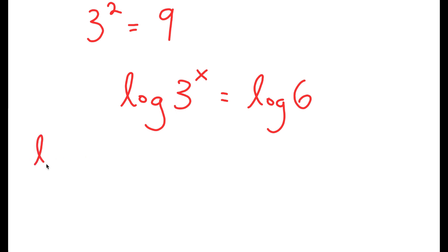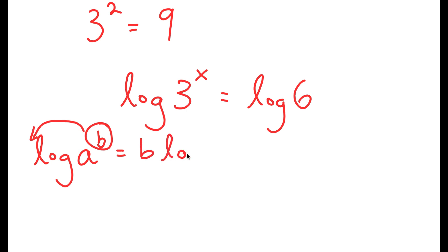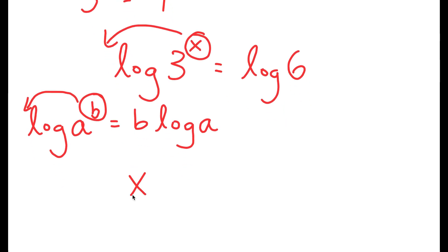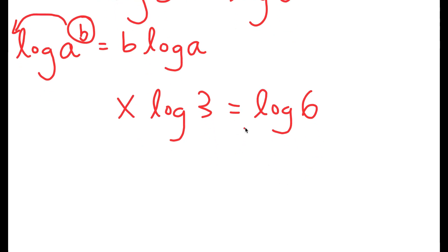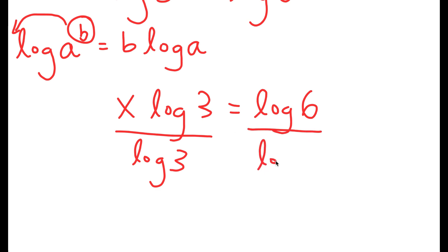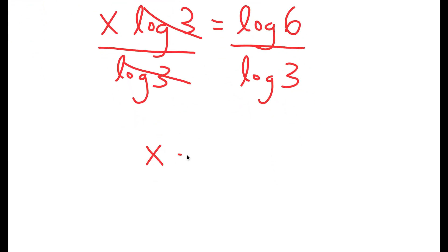From here, if I have something in the form log a to the power of b, I can move this exponent b to the front, so this turns into b times log a. I have log 3 to the power of x and I can move x to the front. So I get x times log 3 is equal to log 6. Now I'm going to divide both sides by log 3 because we want to isolate x. These two cancel out and I get x is equal to log 6 over log 3.